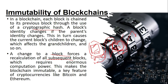This makes the blockchain immutable — a key feature of cryptocurrencies like Bitcoin and Ethereum. If someone tries to change something in a middle block, all the subsequent block cryptographic hashes will change, and they would need to use enormous computation power to recalculate all of them. That is what makes blockchain immutable.